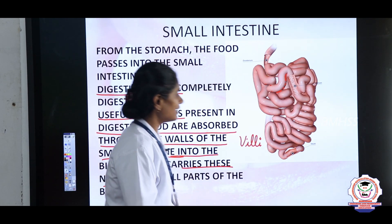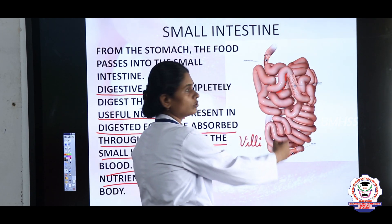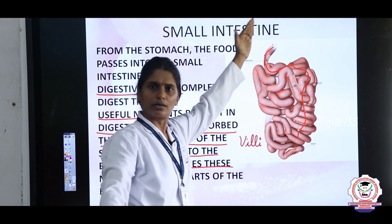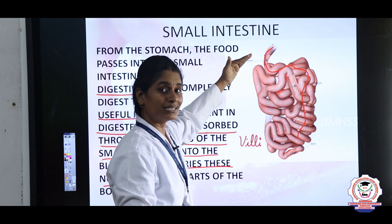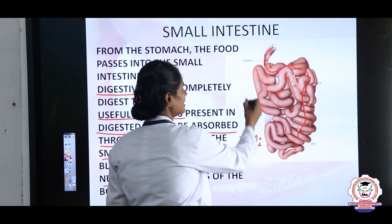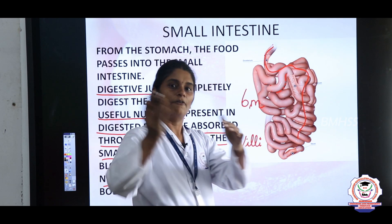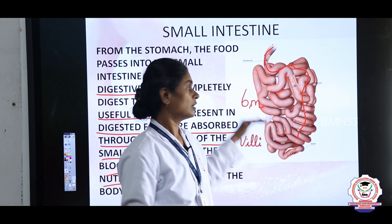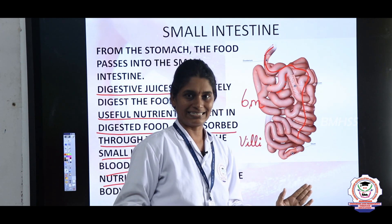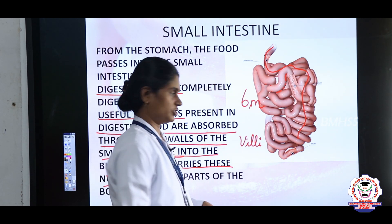The small intestine has three sections, the first being the duodenum. The small intestine is very long — it is nearly 6 meters long, making it the longest part of the digestive system. One meter is roughly the length from your hand to your shoulder, so imagine how long 6 meters is. It is coiled and present in our abdomen region.